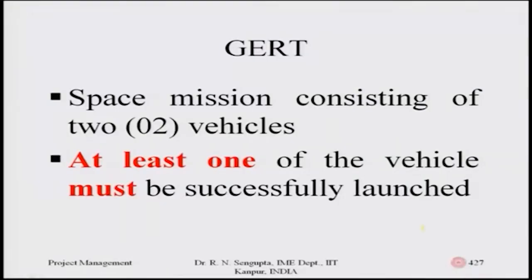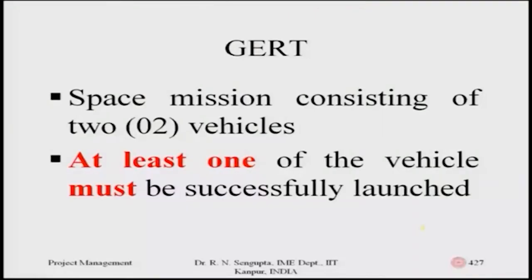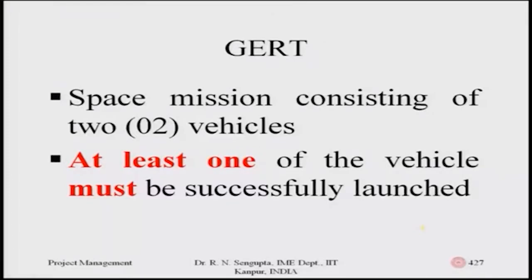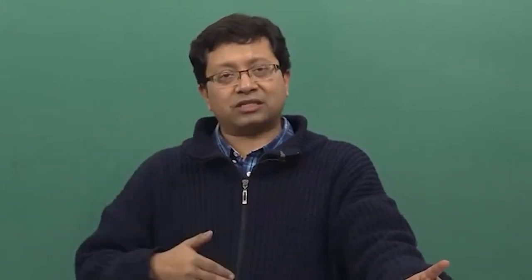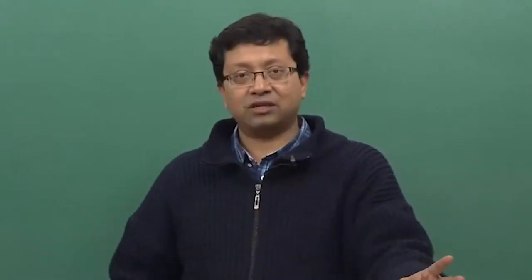Now let us consider a different scenario: again a space mission with two vehicles. In this second example, at least one of the vehicles must be successfully launched for the program to succeed. The combinations remain the same — yes-yes, yes-no, no-yes, and no-no for vehicle one and vehicle two — but the outputs will be totally different from the first example.